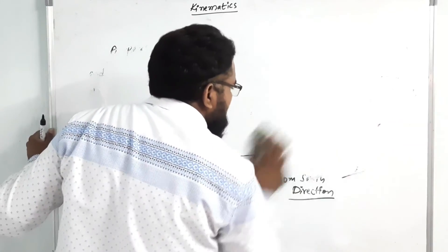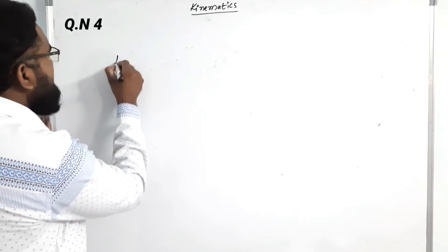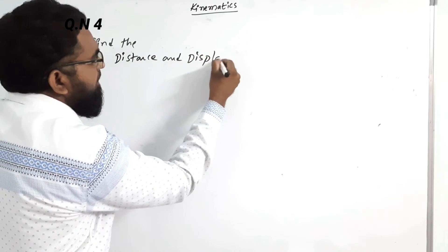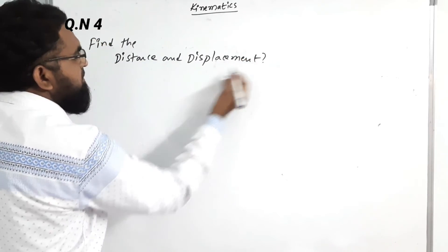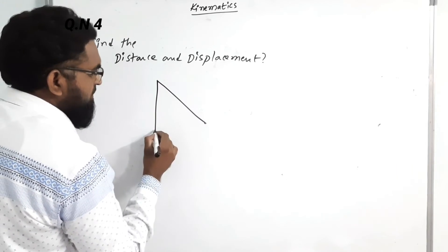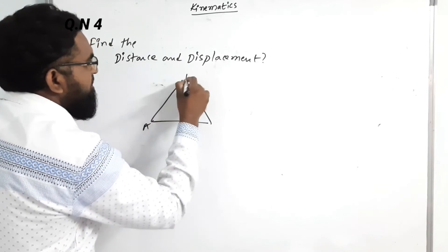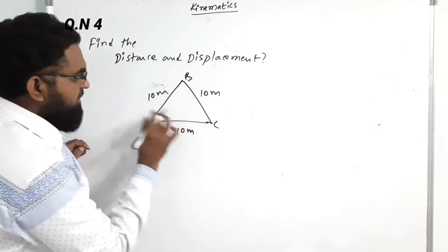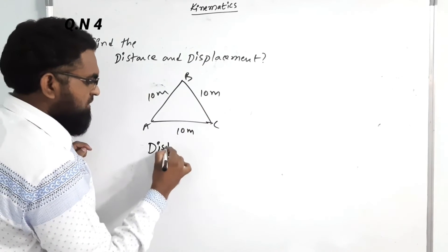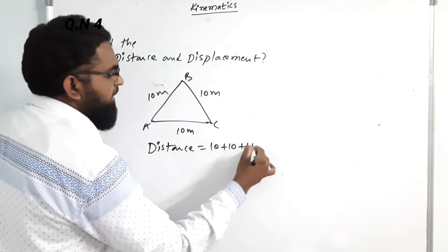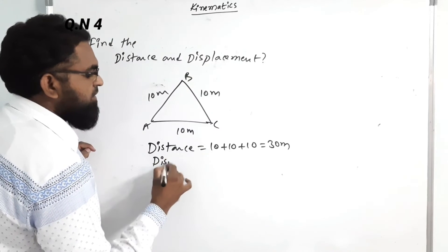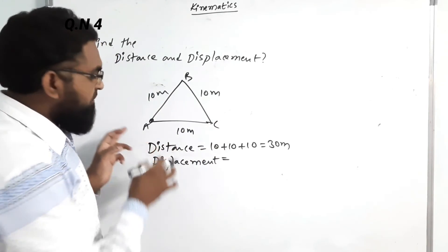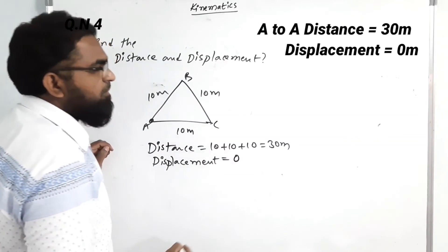Next question: find distance and displacement for a triangular path A→B→C→A, each side 10 meters. Distance = 10 + 10 + 10 = 30 meters. Displacement: since final point and initial point are both at A, they are the same point, so displacement = 0.